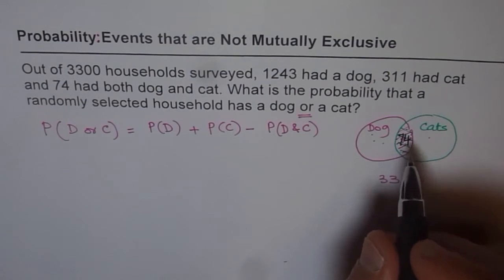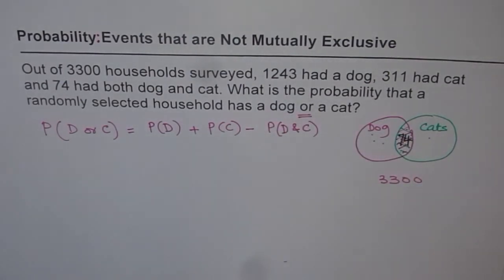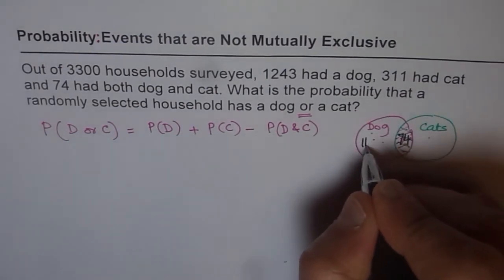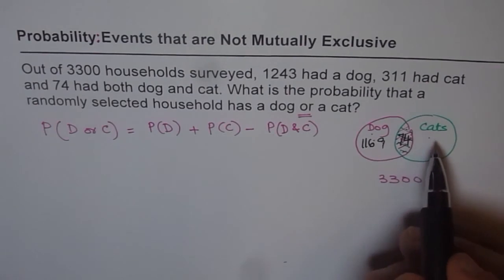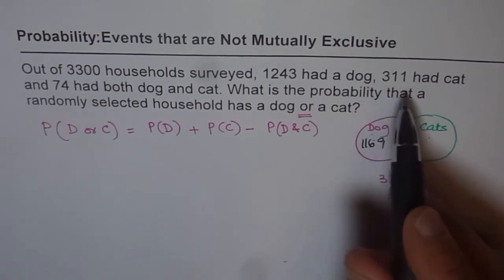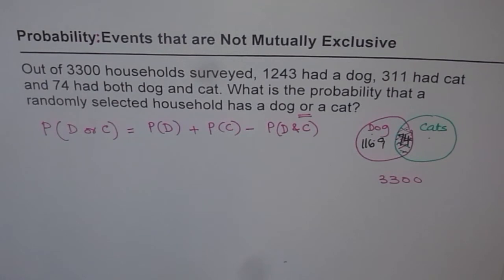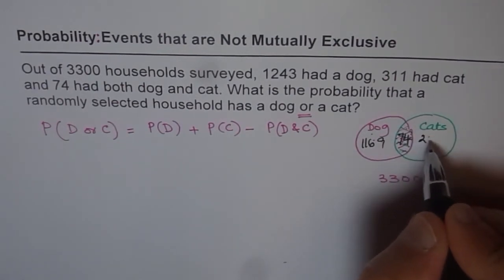74 here means that out of 1243, which have dogs, how many have only dogs? That is what it means. 1243 minus 74, which gives us a number 1169. So 1169 have dogs. How many have only cats? 311 minus 74. So 311 minus 74 are the households which have only cats.